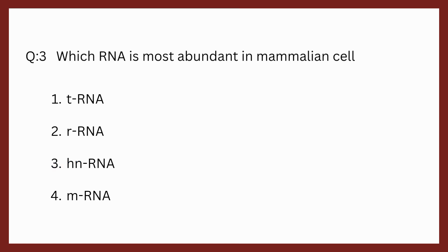Question 3 is which RNA is most abundant in mammalian cell? Options are tRNA, rRNA, hnRNA, mRNA. The correct option is rRNA. It is the most abundant RNA in mammalian cell. After rRNA, mRNA is abundant and tRNA is present in very small quantity in mammalian cell.